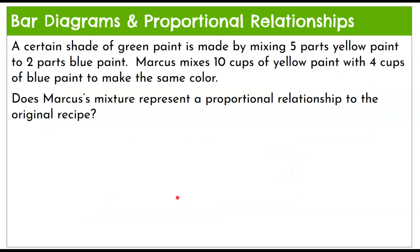Now let's talk about using a bar diagram to determine a proportional relationship. We want a different method when our relationships have messier numbers. A certain shade of green paint is made by mixing five parts of yellow paint to two parts of blue paint. Marcus mixes ten cups of yellow paint with four cups of blue paint to make the same color. Does Marcus's mixture represent a proportional relationship to the original recipe?